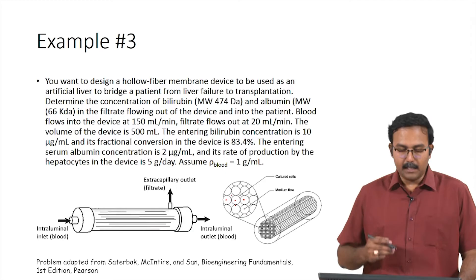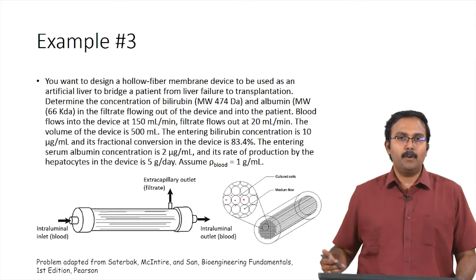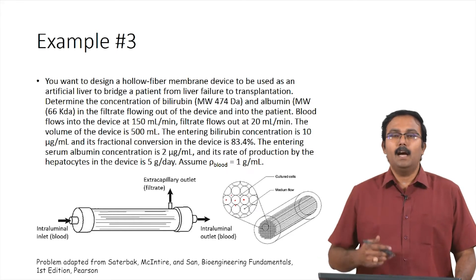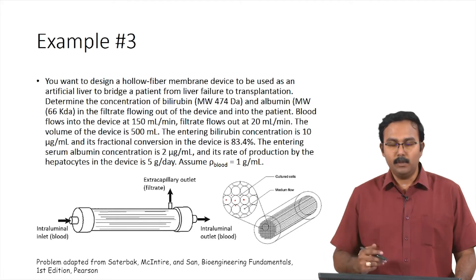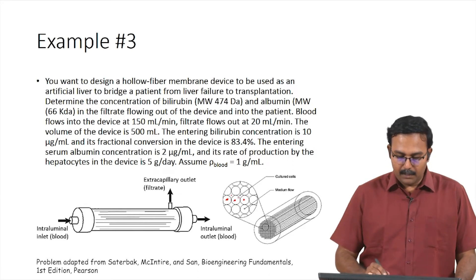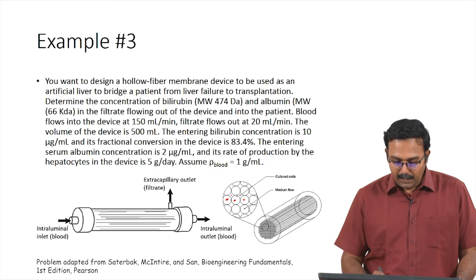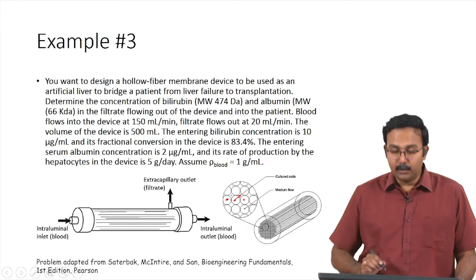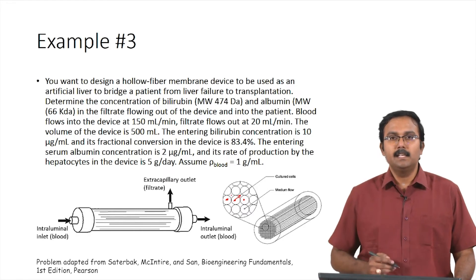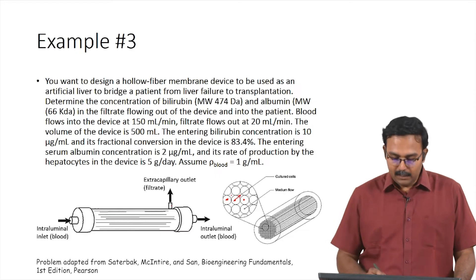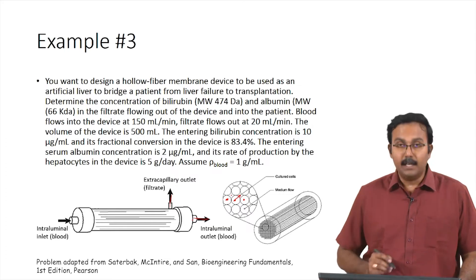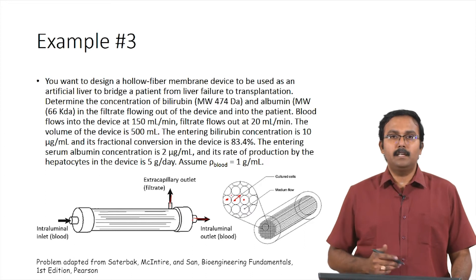Instead of your natural liver regularly performing this function, you have this extracorporeal device. Blood from the patient is taken and allowed to flow through these hollow fiber membranes into these tubes. Because there is a fiber surrounding these tubes, some of the filtrate gets filtered and enters the space between the tubes, where it is acted upon by the cultured cells, purifying the blood. This filtrate from the extracapillary outlet is mixed with the intraluminal blood to finally be sent back into the patient as purified blood.